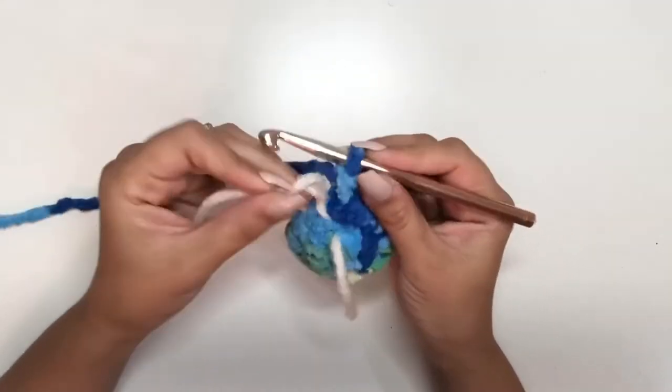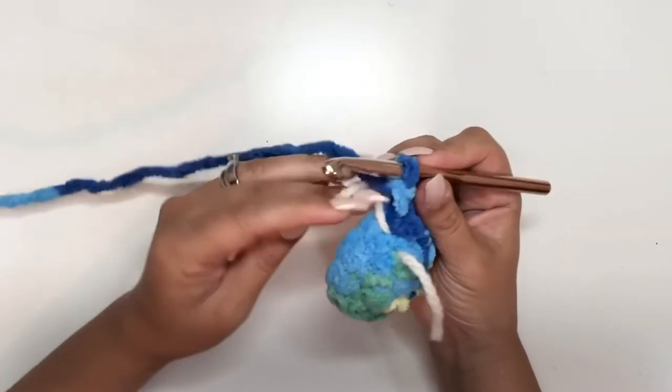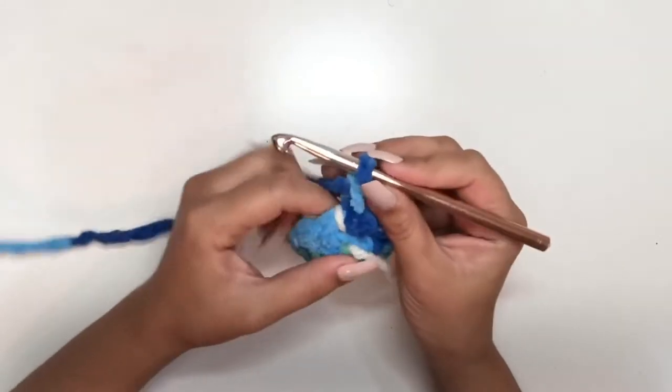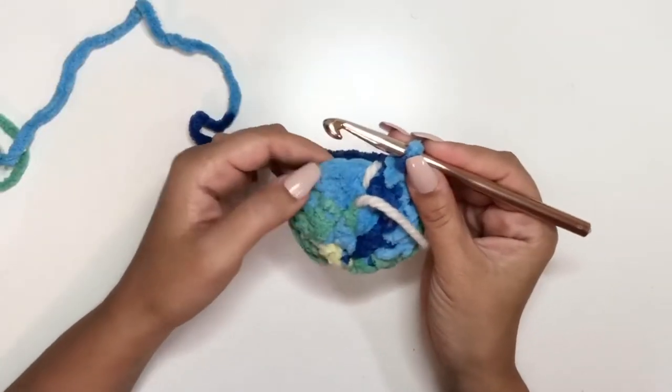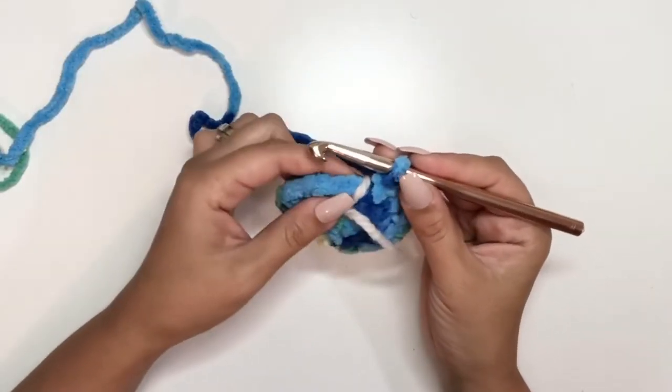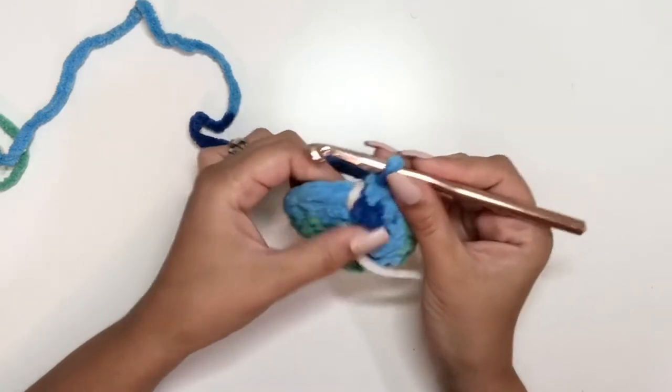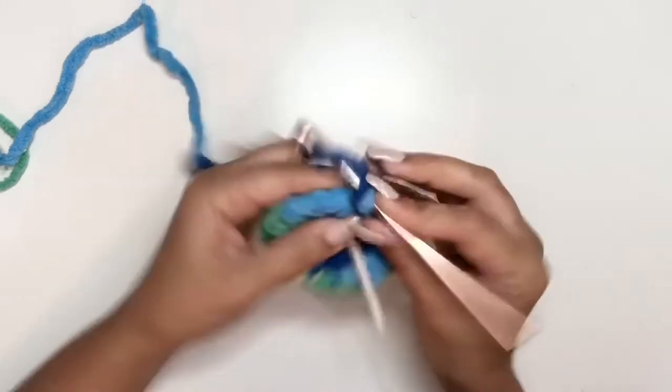Perfect. We're going to move our stitch marker or strand of yarn back. For the next row we're going to continue one single crochet into each stitch for another three rows.